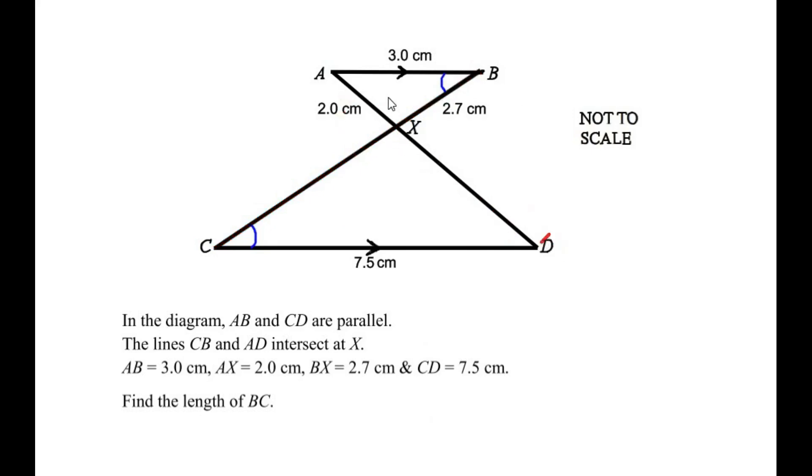Similarly, the line AD acts as a transversal line cutting the two parallel lines at point A and point D. So we can say that the angle BAX is equal to angle XDC, which are again the alternating angles of the two parallel lines.